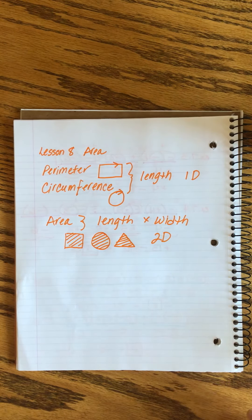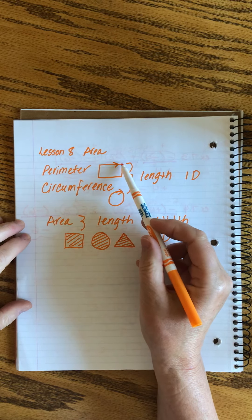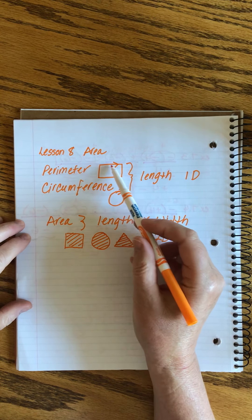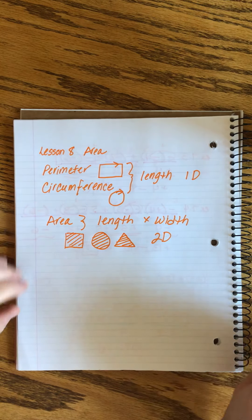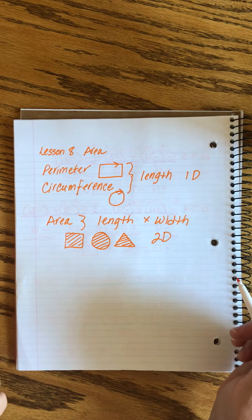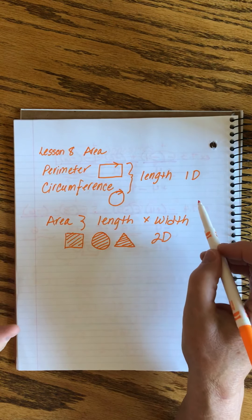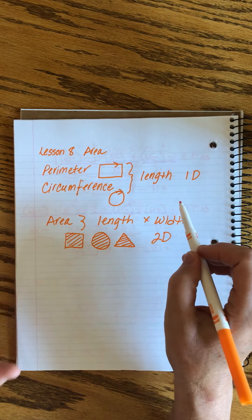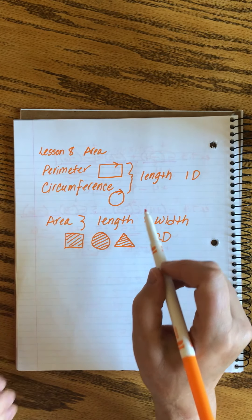When I was in about third grade and the teacher was first introducing this, she said: perimeter is the fence around the farmer's field, and area is the crops. That made so much sense and has stuck with me forever. So we've talked about perimeter and circumference — now we're going to talk about area.